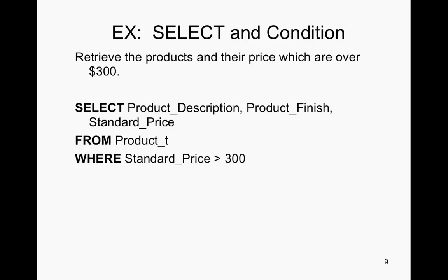Now we're going to have a SELECT with a condition. We want to retrieve the products and their price which are over $300. So you'll select product description — and again, these are not tables, these are going to be inside the tables. We want the product description, the product finish, and we put standard price in there because we want to know the price over $300. We retrieve this information from the product table. WHERE is the condition — the standard price is going to be greater than $300.